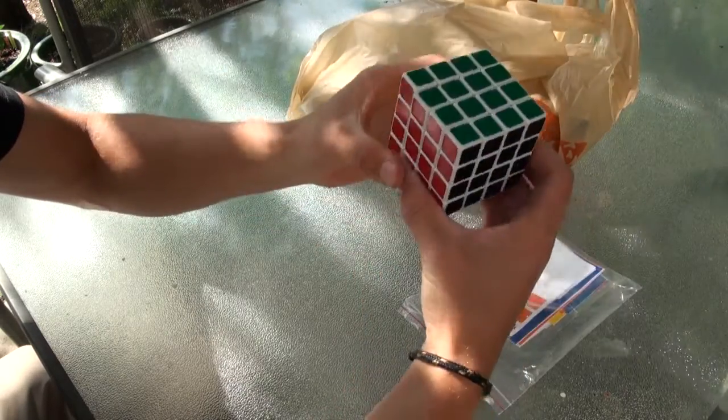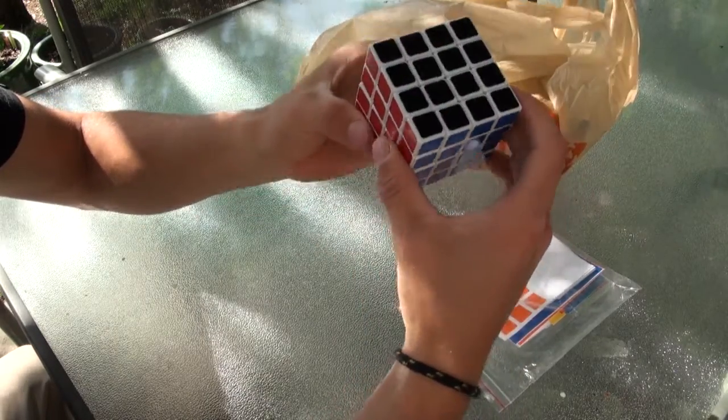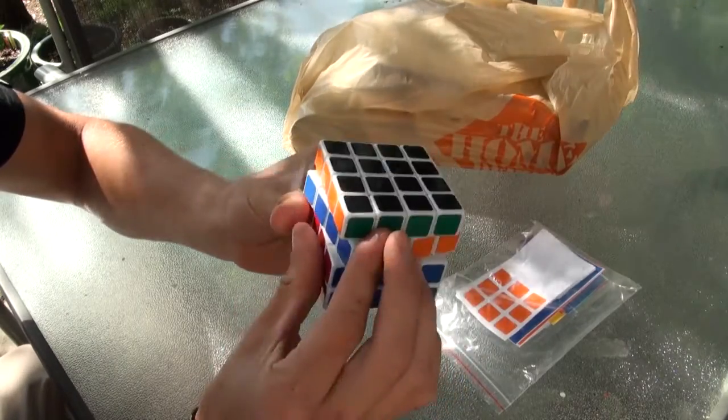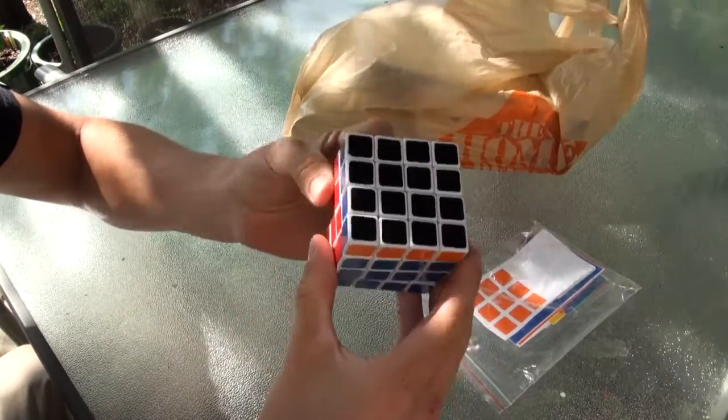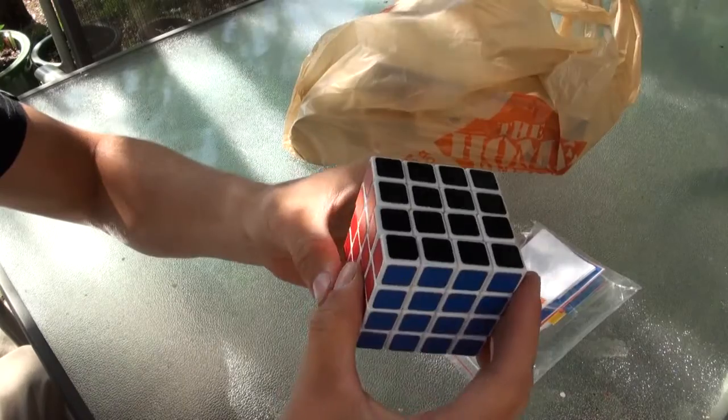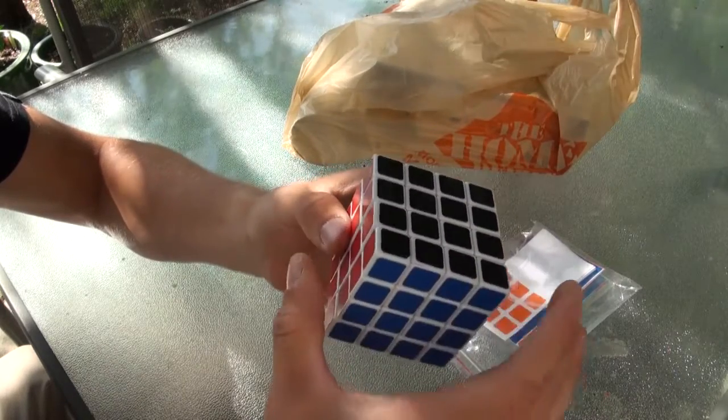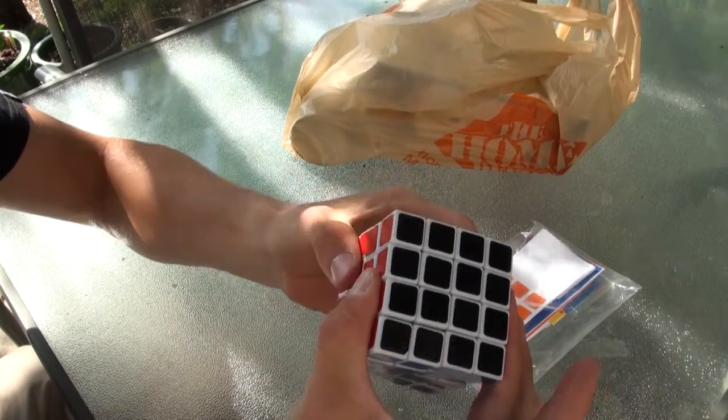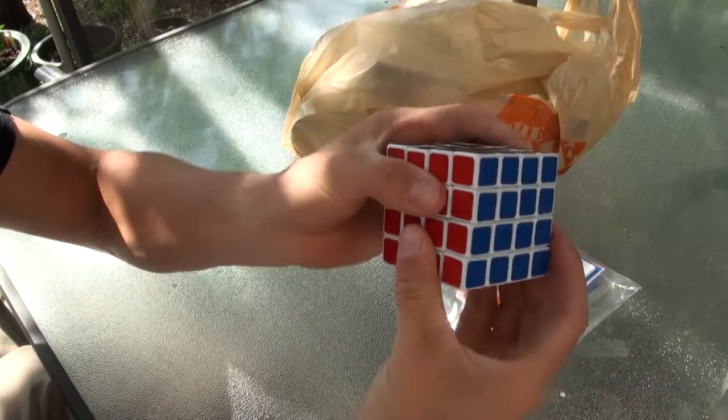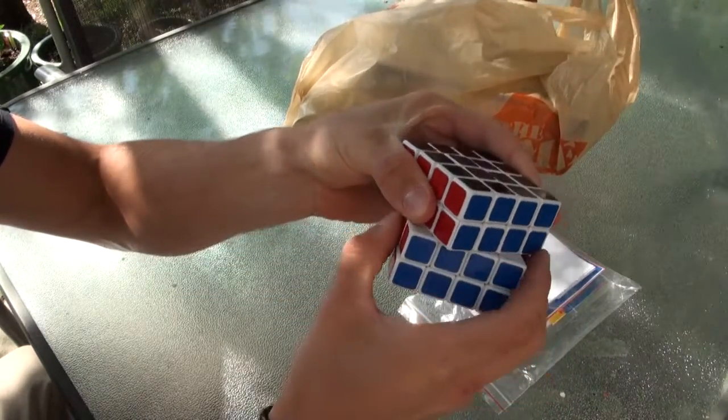So I'm starting off with a Diane MF8 4x4 white and all the layers are functional. Basically what I'm going to do to it is I'm going to make it into a 2x4x4 so that cuts off two of these layers so these two are bandaged like so, so there's only one layer in the middle.